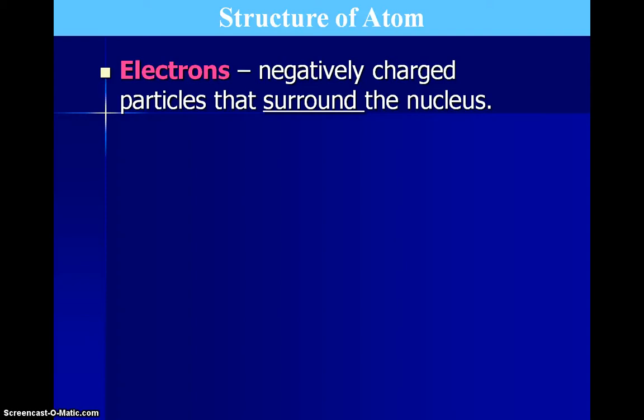Now electrons, on the other hand, they are negatively charged, and they surround the nucleus in sort of this electron cloud. And they are so relatively tiny compared to protons and neutrons in terms of their mass that we say they essentially have no mass or zero AMUs.